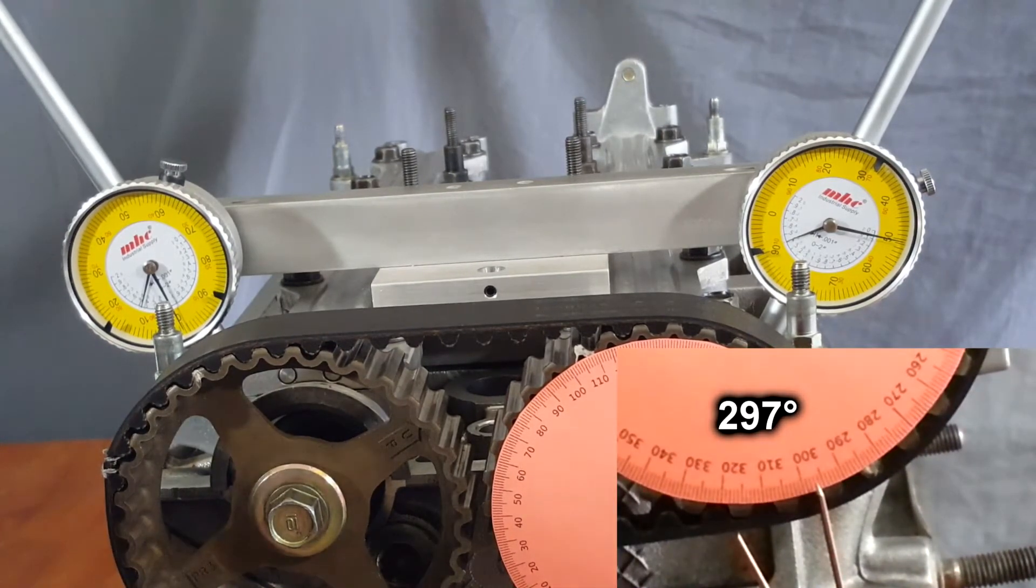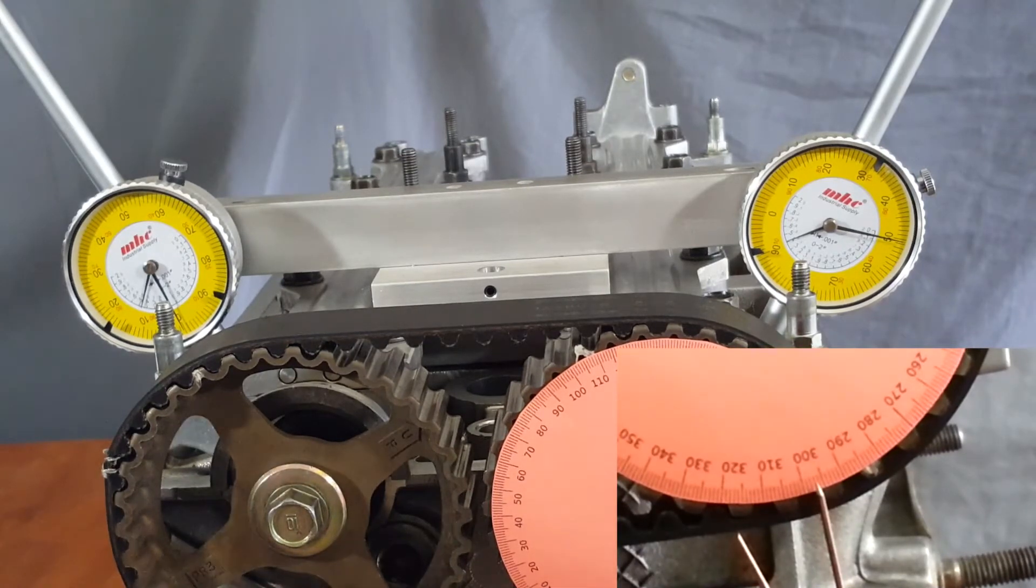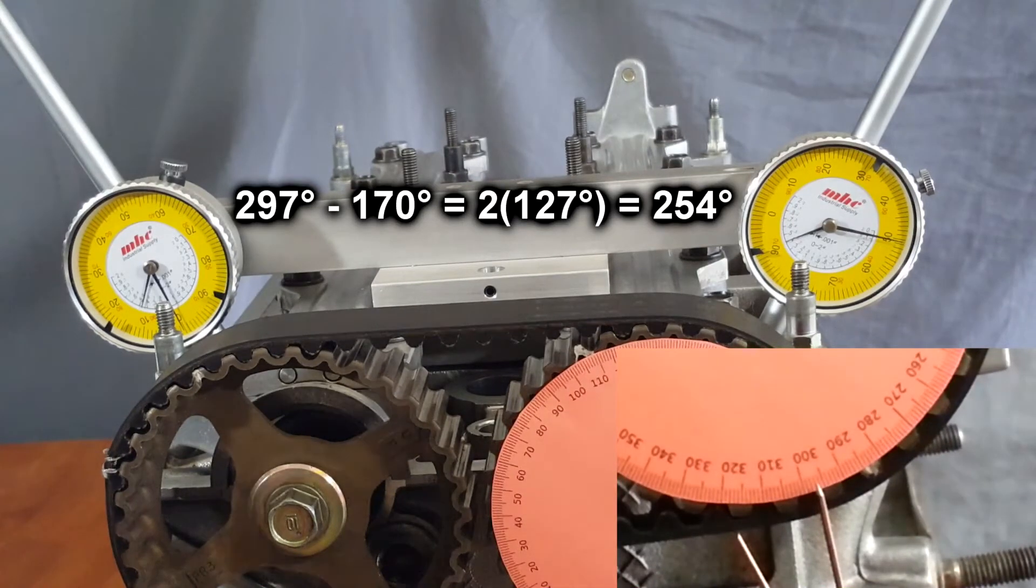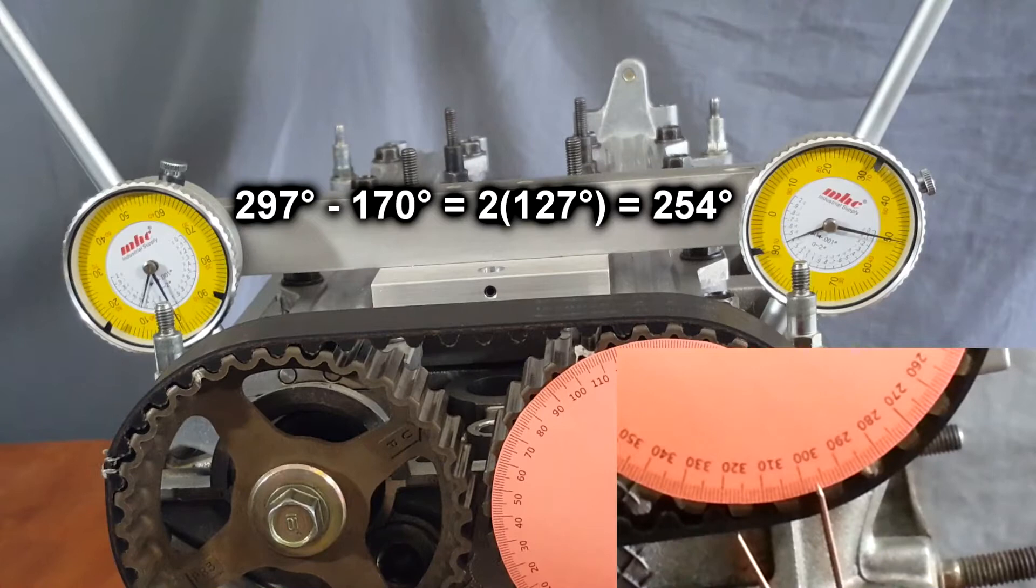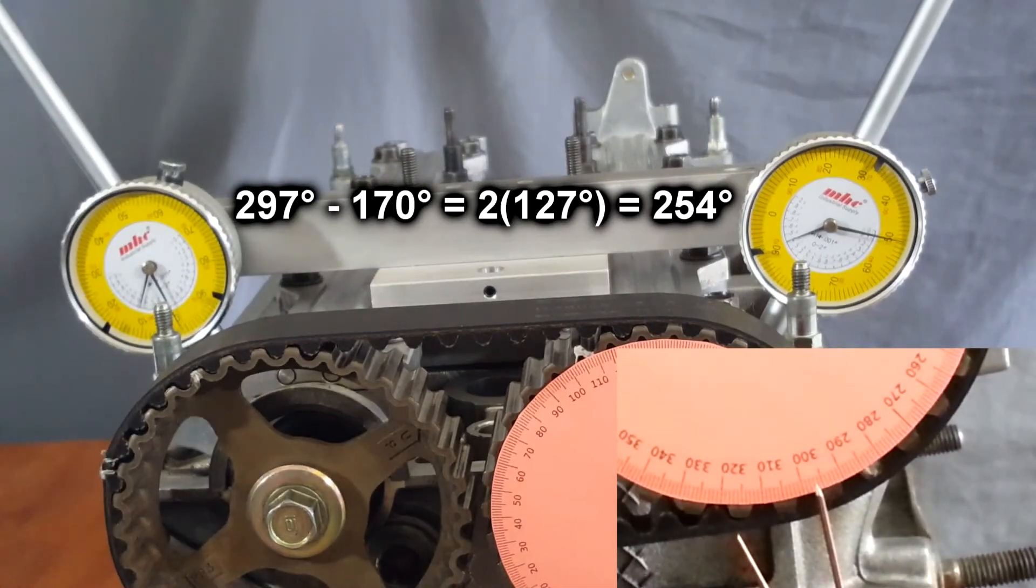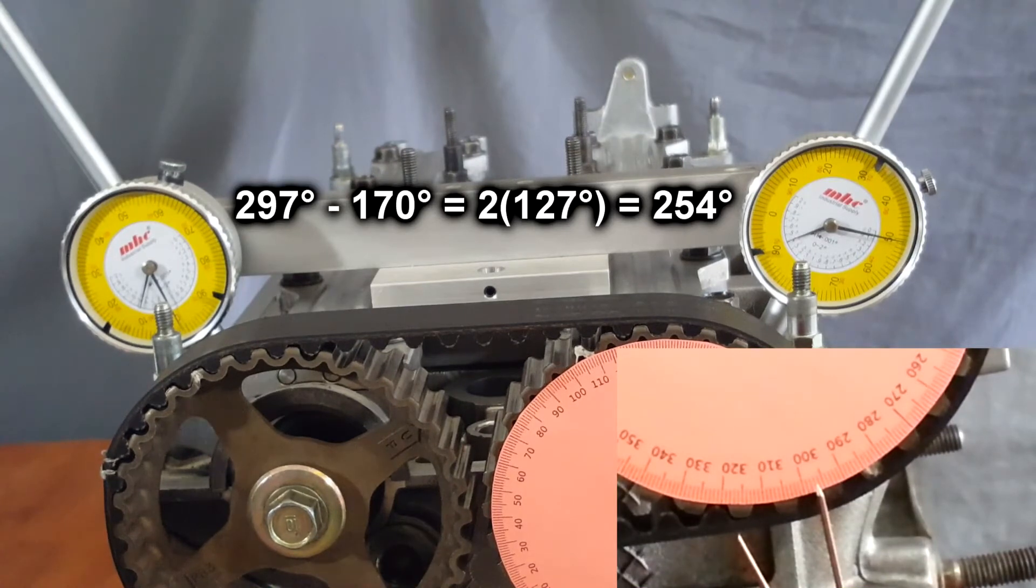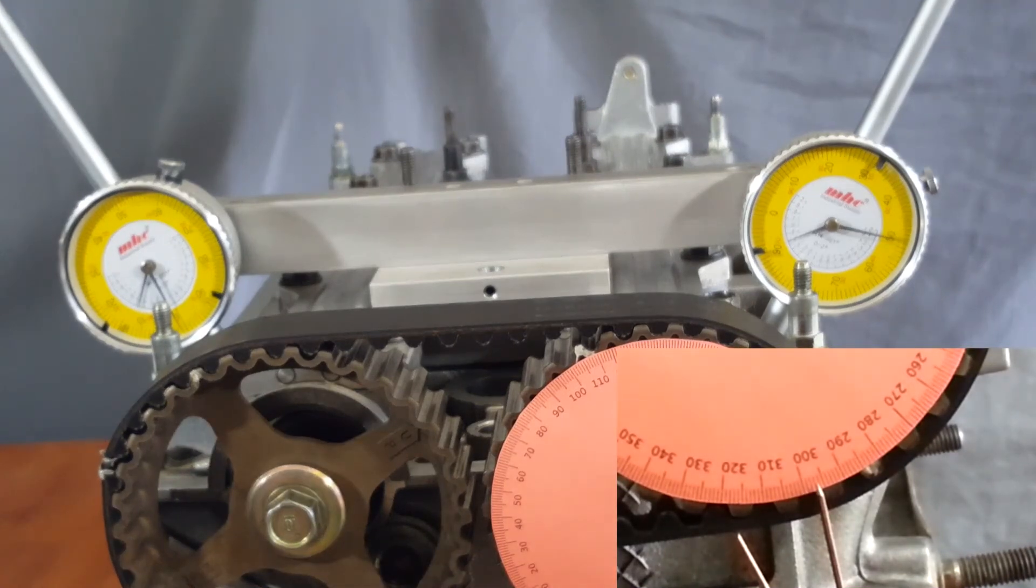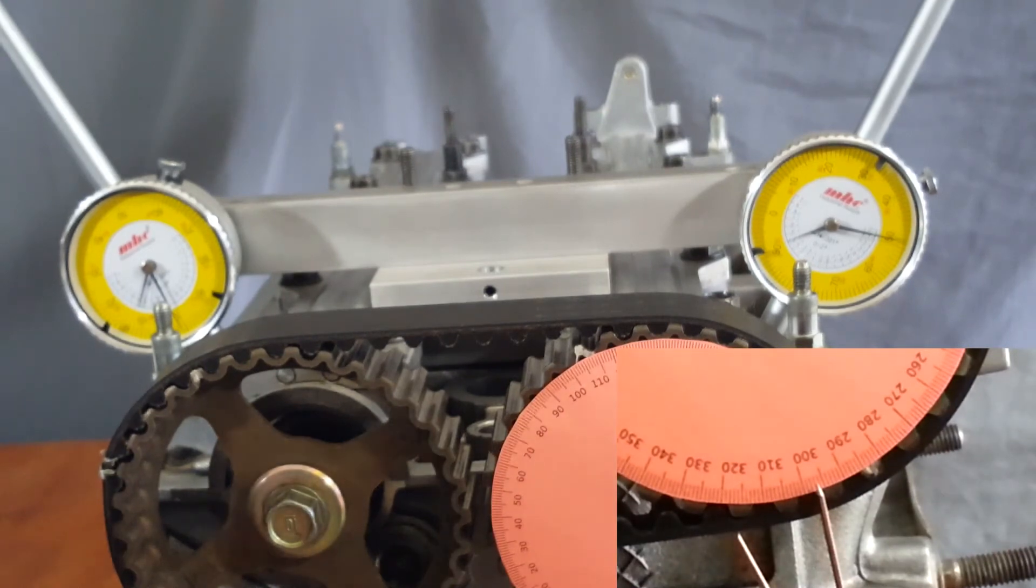So we'll take the difference of those two numbers: 297 minus 170, and it equals 127. We'll double that value and we get 254 degrees of crankshaft duration. For the intake it is also 255, which we verified that these are Pro 1 cams.